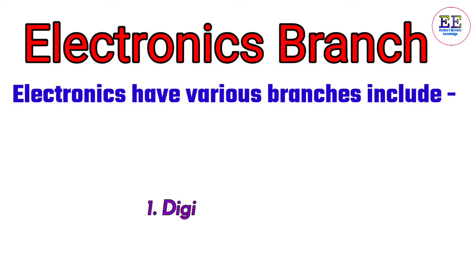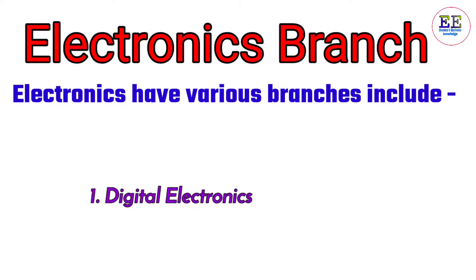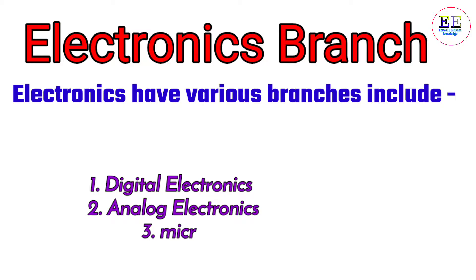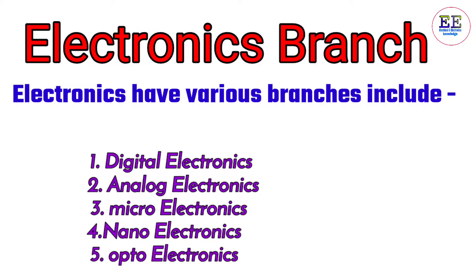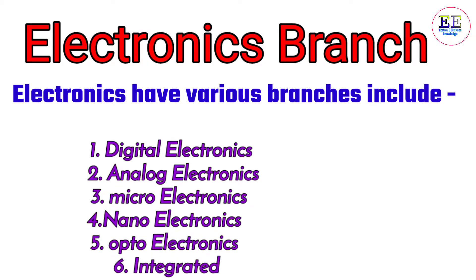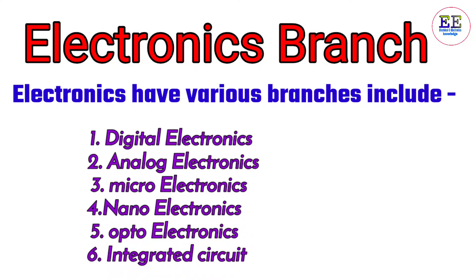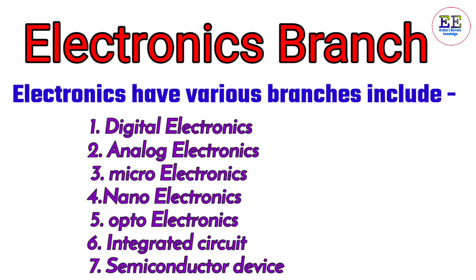Electronics has various branches including: number one, digital electronics; number two, analog electronics; number three, microelectronics; number four, nanoelectronics; number five, optoelectronics; number six, integrated circuits; and number seven, semiconductor devices.